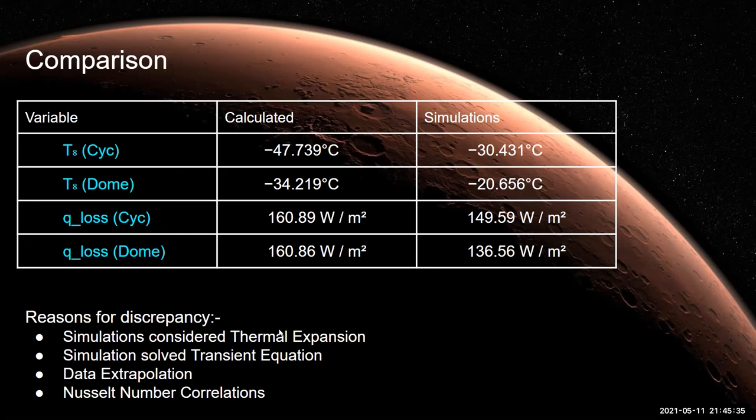First ANSYS took thermal expansions into account which we didn't. Since cylinder expands radially but dome shape expands both ways, deviation from simulation was higher for the dome.